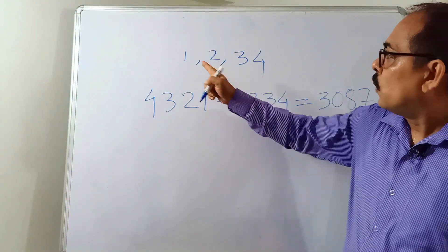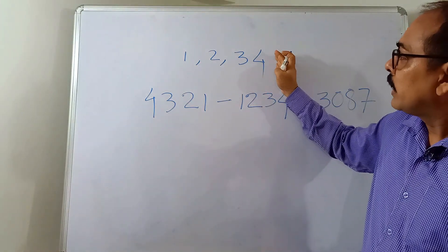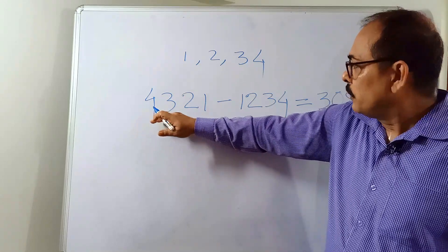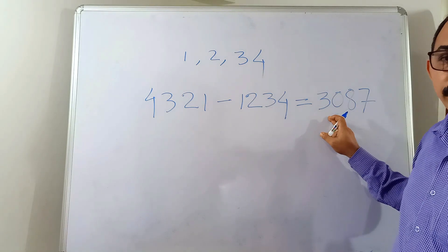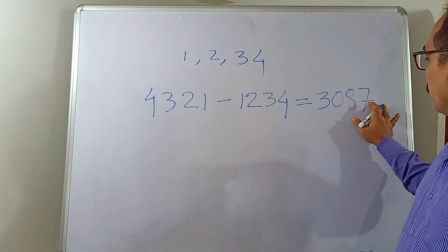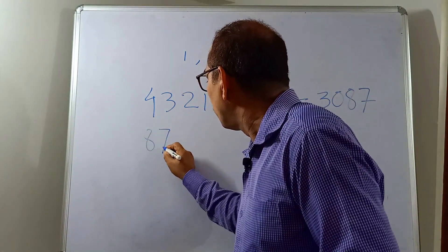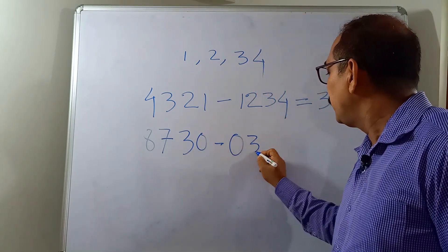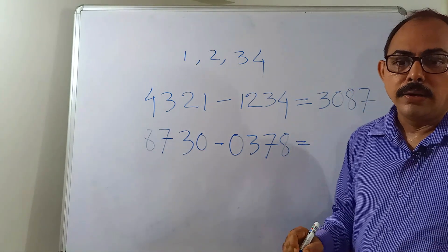Let us explain the Kaprekar operation once again with another number. Let's take 1, 2, 3, 4. The largest number we can make is 4321, and from that we subtract the smallest number 1234. The result is 3087 — that's the first step done. Now with these digits we write the largest number: 8730, minus the smallest number 0378.